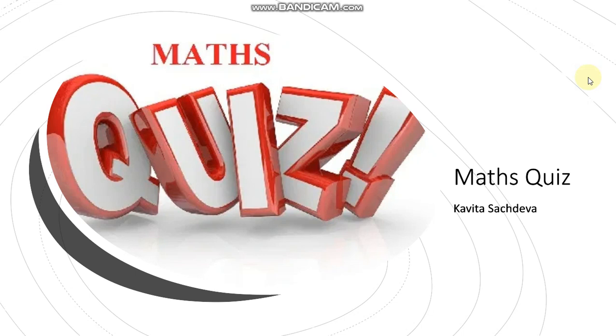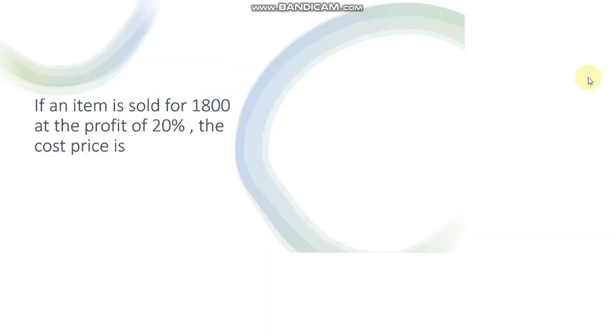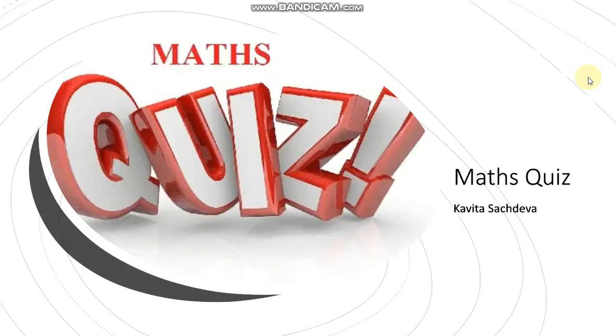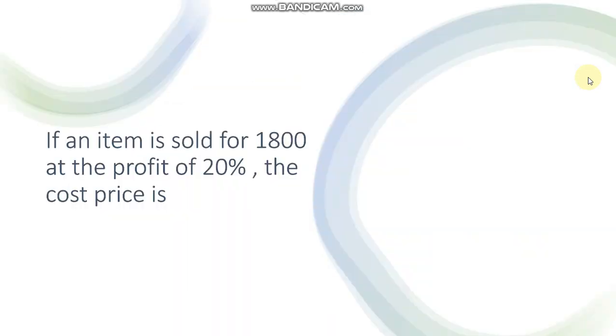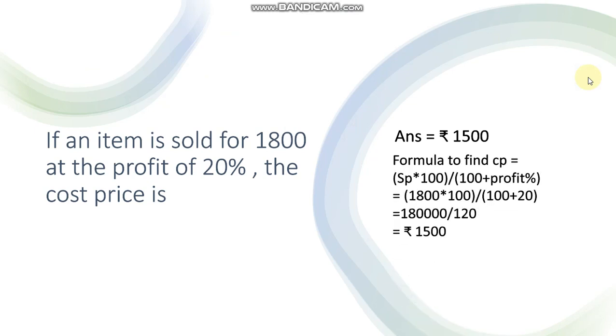Question number 1: If an item is sold for rupees 1800 at profit of 20%, then find the cost price. Answer is rupees 1500. How you will calculate? Formula to find CP is equal to SP into 100 upon 100 plus profit percent. You will put the values in this formula and find out CP is equal to 1500.